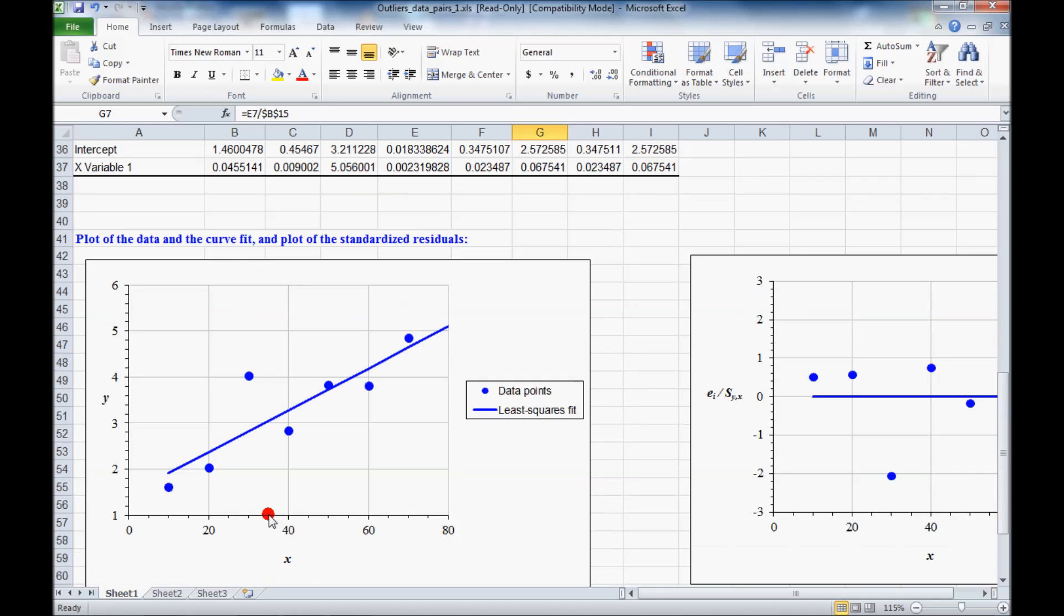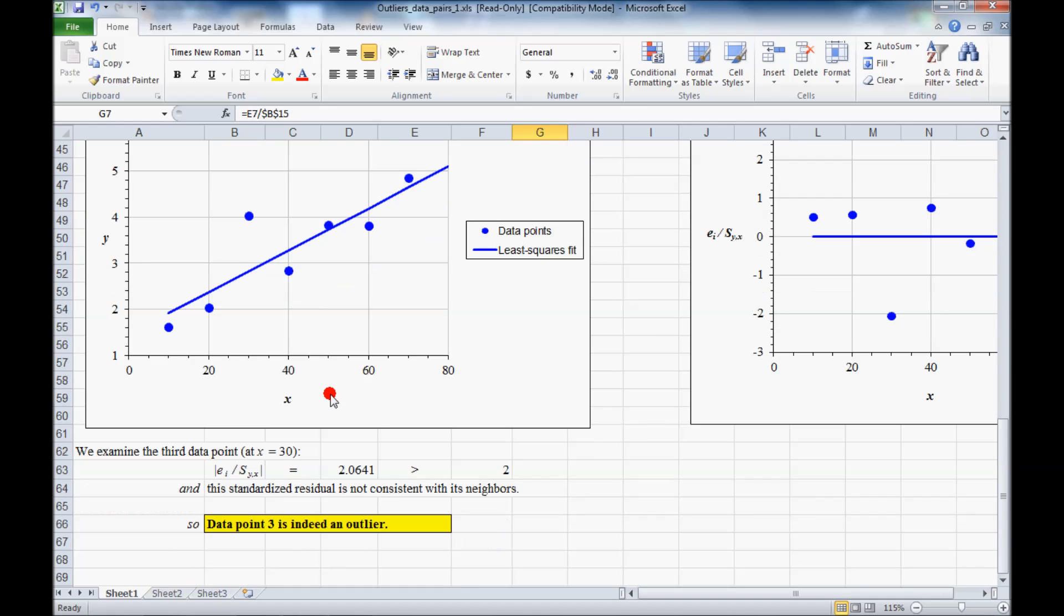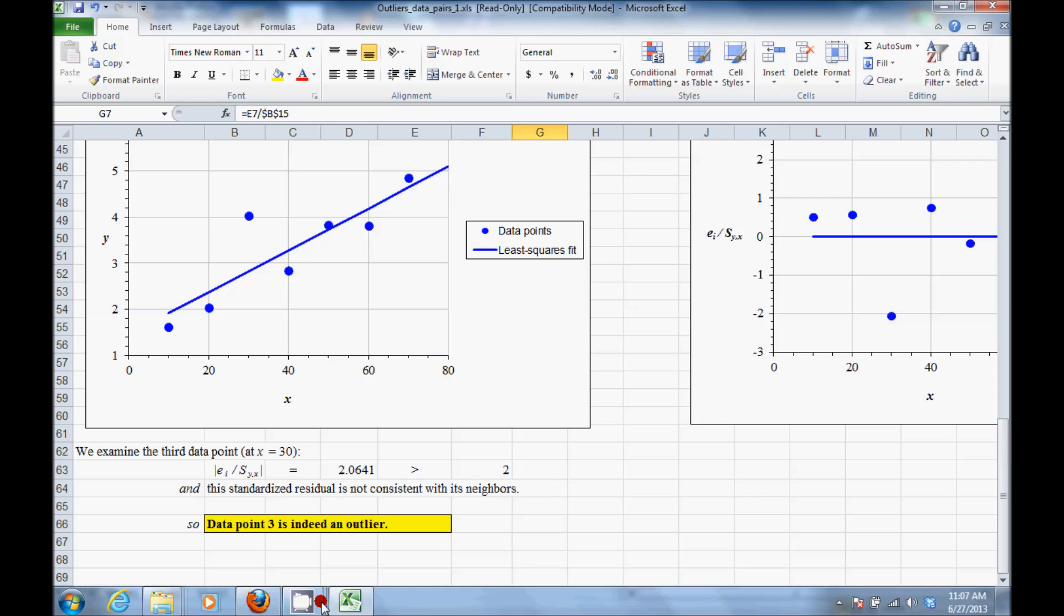So I would say that data point 3 is indeed an outlier. We can take it out. We can remove it. And then at that point, we would have to repeat the analysis if we suspected any other outliers.